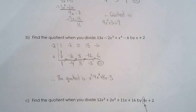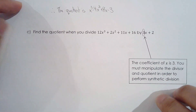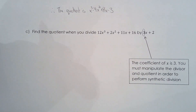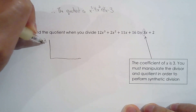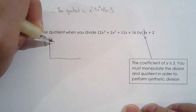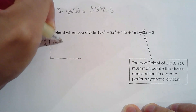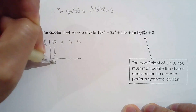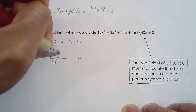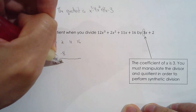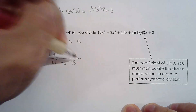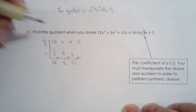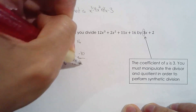For the last example the divisor is 3x plus 2. I don't advise using synthetic division here, but I'll show you anyway. The value to use is negative two-thirds. Write the coefficients of the dividend, bring down 12, then 12 times negative two-thirds is negative 8. Adding gives negative 6, and negative 6 times negative two-thirds is positive 4, giving 15.